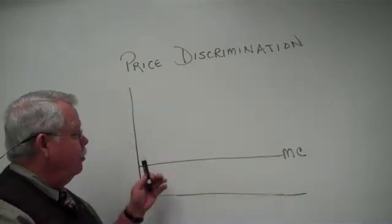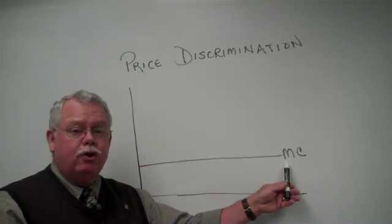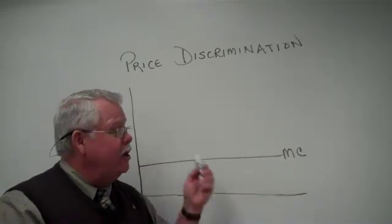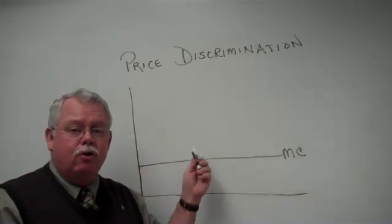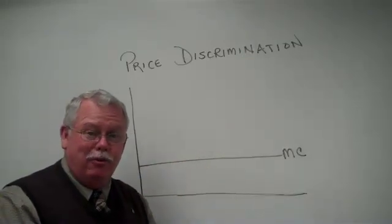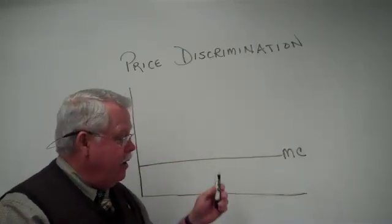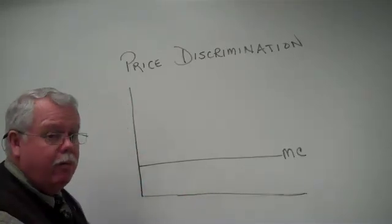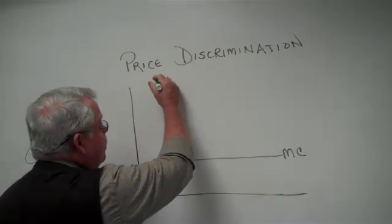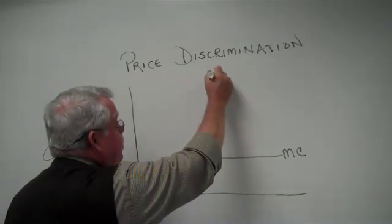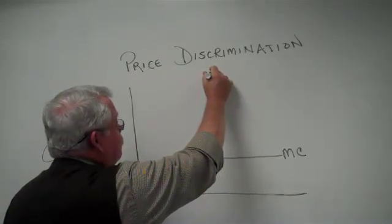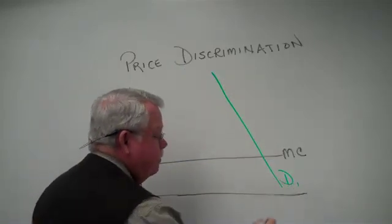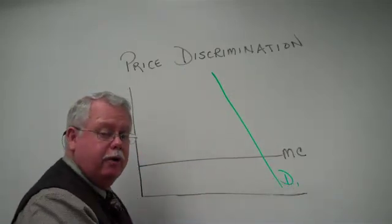We're going to assume we have a company with a constant marginal cost — we do that just because it makes it simple. You can have the regular rising marginal cost curve, but it doesn't help the explanation. In this market, let's say there are two segments. There's one market with a demand curve — let's call it demand curve number one for market segment number one.